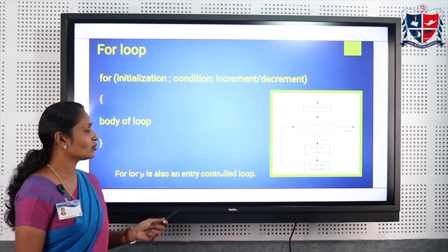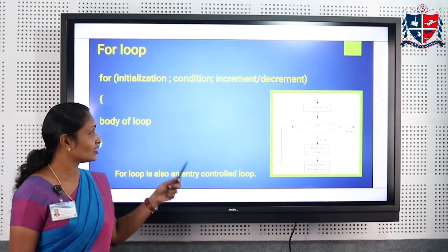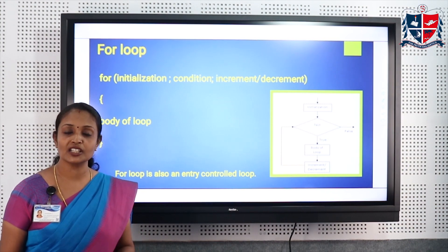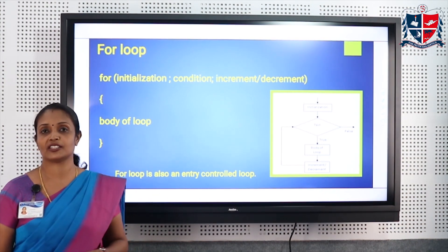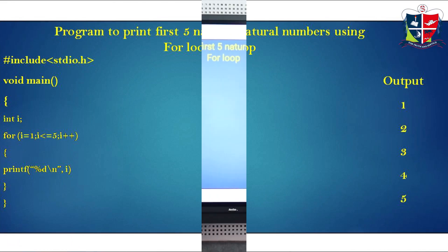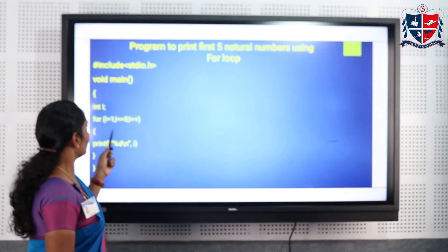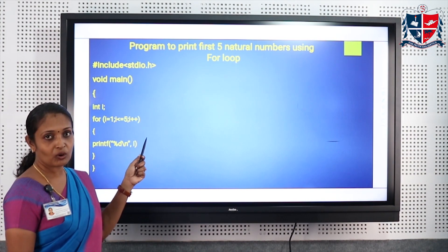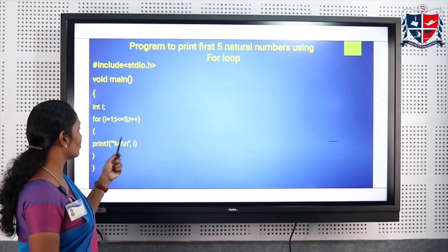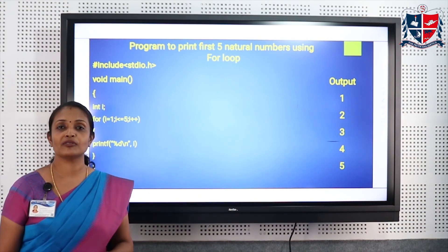The for loop is also an entry control loop because the condition is evaluated at the start — before executing the body of the loop, the condition needs to be evaluated, and if true only then the body executes. Taking the same example for printing natural numbers, in the for loop all three steps — initialization, condition, and increment or decrement — are included in a single line, and executing this program we get the result 1 2 3 4 5.